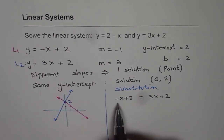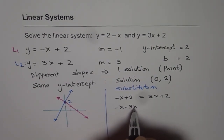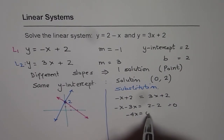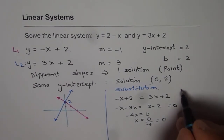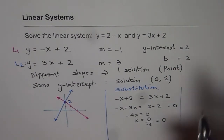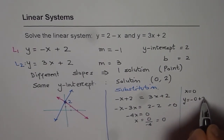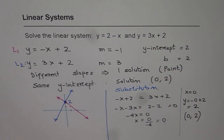We bring the x terms together and constants together: minus x minus 3x equals 2 minus 2, which gives minus 4x equals 0, so x equals 0. Substituting x equals 0 into the first equation: y equals minus 0 plus 2, giving y equals 2. So the solution is x equals 0 and y equals 2.